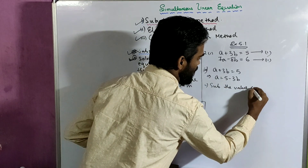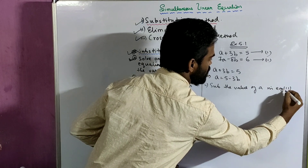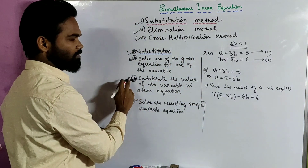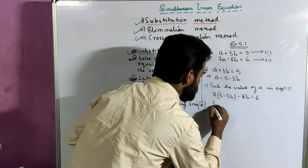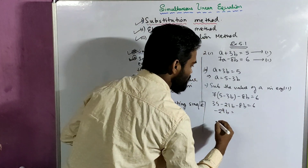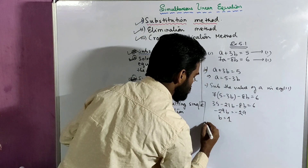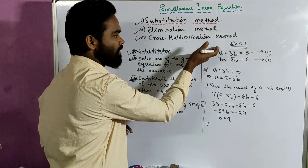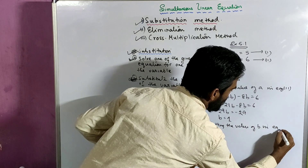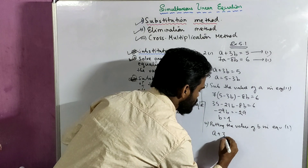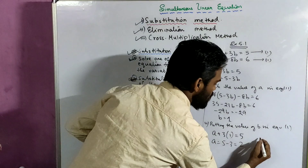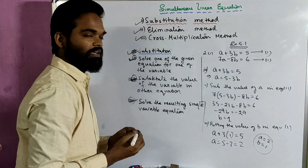Substituting the value of a in equation 2: instead of a, I write 5 minus 3b, so 7 times (5 minus 3b) minus 8b equals to 6. This is a linear equation in one variable. So this gives 35 minus 21b minus 8b equals to 6, which means minus 29b equals to 6 minus 35, which is minus 29. So b equals to 1. Now putting the value of b in equation 1: a plus 3 times 1 equals to 5, which means a equals to 5 minus 3, so a equals to 2. Therefore a equals to 2 and b equals to 1 is the solution.